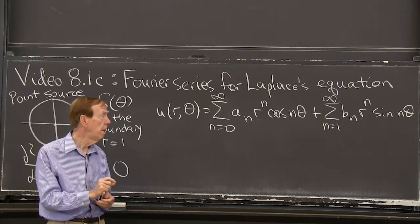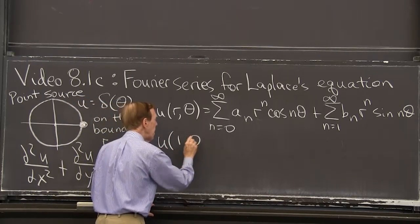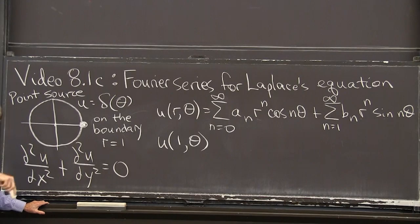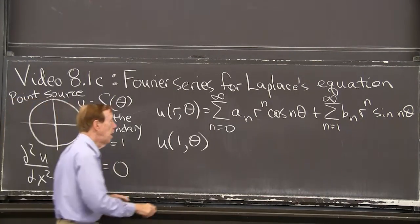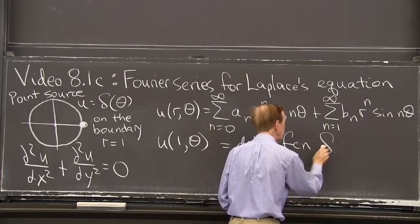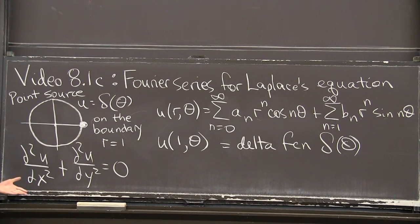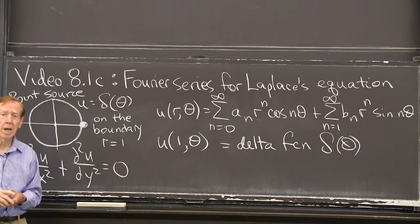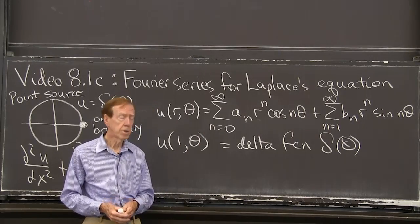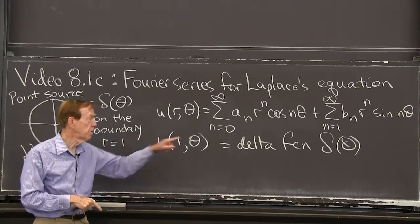Put in r equal 1. Put r equal 1 and then this solution u at 1 and theta, r equal 1 is the boundary. It's the circle. And that's where we're given u of 1 to be the delta function. The point source, the delta function, delta of theta. The point source at theta equals 0. So you see our job. That function, that boundary condition, is supposed to tell us the a's and the b's. And then we have our solution.